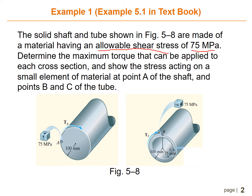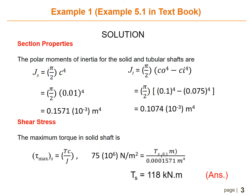The given information is: allowable shear stress is 75 megapascal, and the radius of the solid shaft is 100 millimeters. For the solution, the first step is to find the section properties — specifically J, the polar moment of inertia, for both the solid and tubular shaft. For the solid shaft, we use J equals pi over 2 times c to the power of 4. Substituting c equals 0.1 meters, we get J for the solid shaft equals 0.1571 times 10 to the power of negative 3 meters to the power of 4.